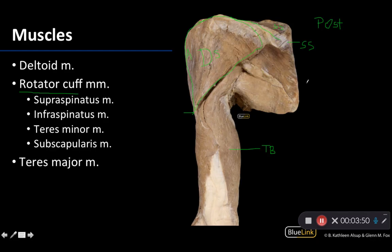The supraspinatus is the most commonly injured rotator cuff muscle, particularly its tendon, which we've seen in some of the other dissection supplements. Inferior to the scapular spine is the infraspinatus — this larger expanse of muscle underneath here, sitting in the infraspinous fossa of the posterior scapula, also with a distal attachment on the greater tubercle.